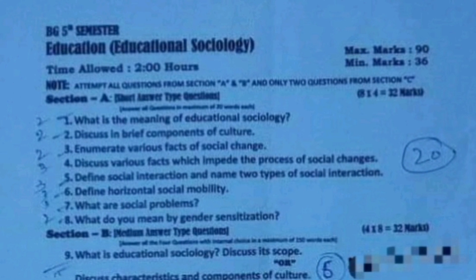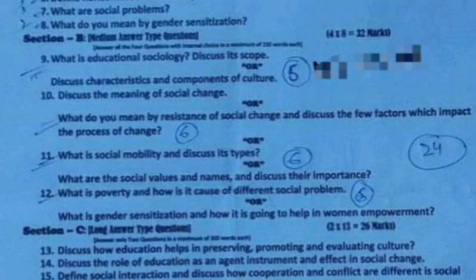Question number 5: define social interaction and name 2 types of social interaction. Question number 6: define horizontal social mobility. Question number 7: what are social problems? Question number 8: what do you mean by gender sensitization?